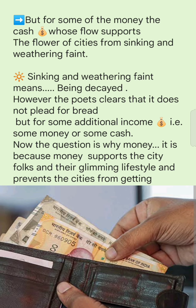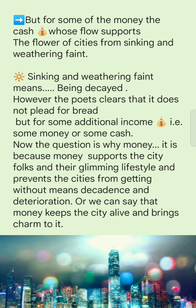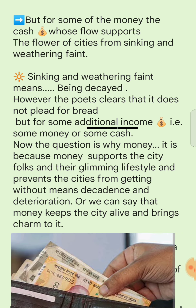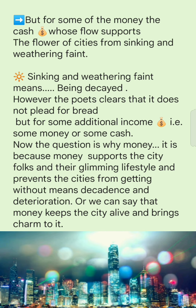'The cash whose flow supports the flower of cities from sinking and weathering faint.' This money is what makes you powerful. 'Sinking and weathering faint' means being decayed — slowly deteriorating and getting spoiled. The poet clarifies it does not plead for bread, but for some additional income, some cash. Money supports the city folks and their gleaming lifestyle and prevents the cities from decadence and deterioration — money keeps the city alive and brings charm to it.